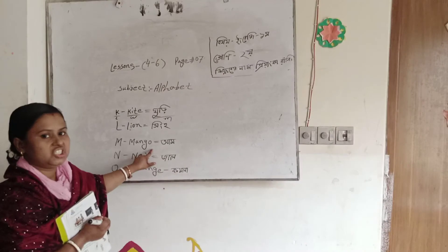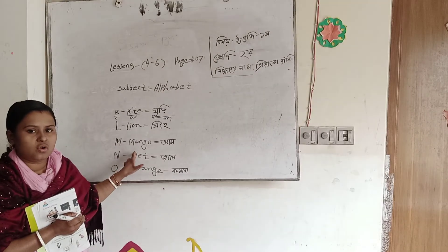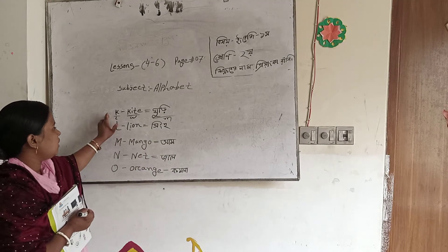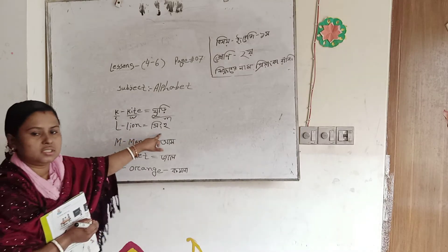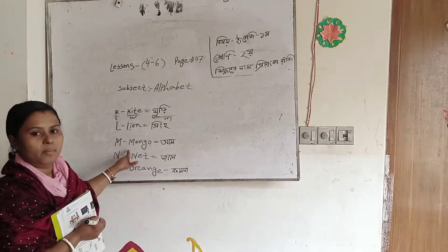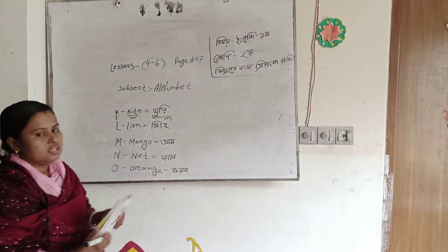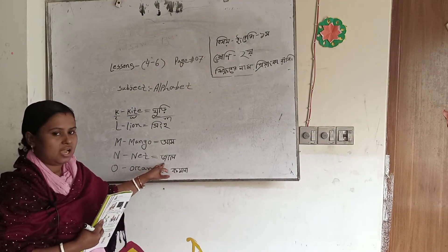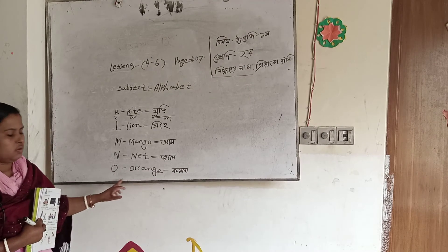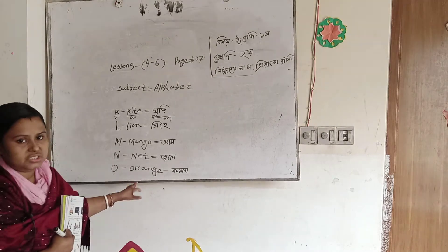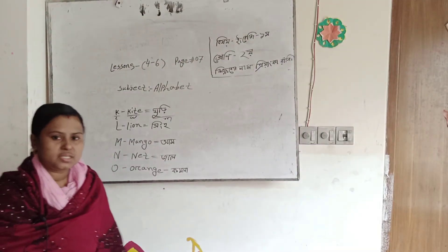M for mango — mango means 'am'. K for kite — kite means 'guri'. L for lion — lion means 'shingh'. M for mango — mango means 'am'. N for net — N-E-T — net means 'jal'. O for orange — O-R-A-N-G-E — orange means 'comula'.